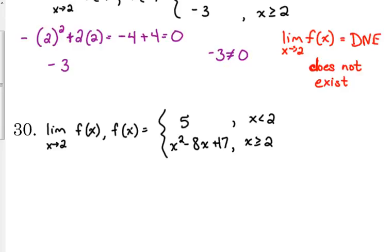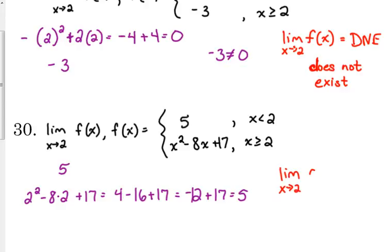Number 30 asks us another piecewise function as we approach 2. Same thing, we want to plug it into both pieces. The first piece is always 5. The second piece, let's see, we've got 2 squared minus 8 times 2 plus 17. That's 4 minus 16 plus 17, that's negative 12 plus 17, which is 5. 5 is equal to 5, so this limit does exist. As this function approaches 2, this limit is equal to 5, because the left side and the right side equal the same value.